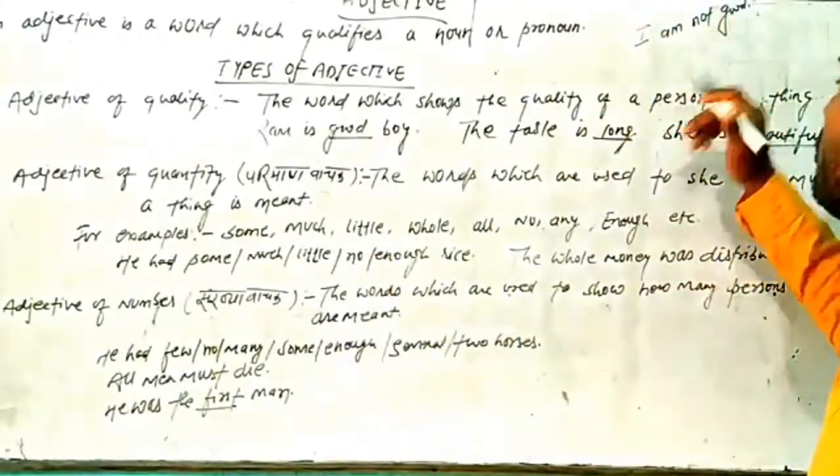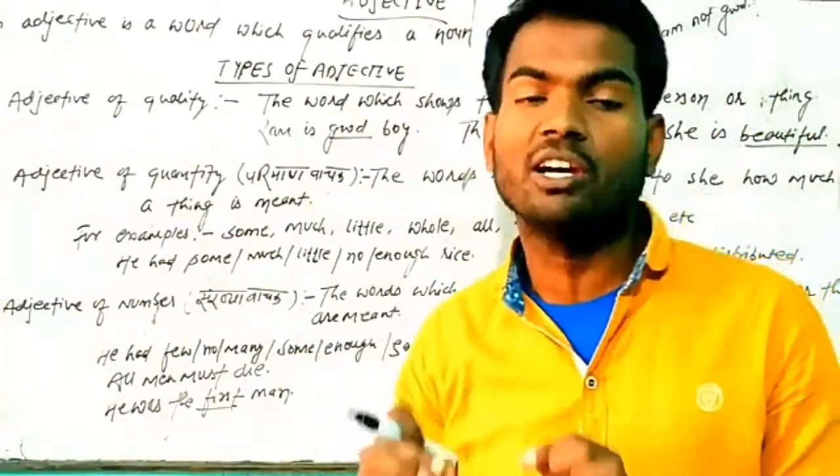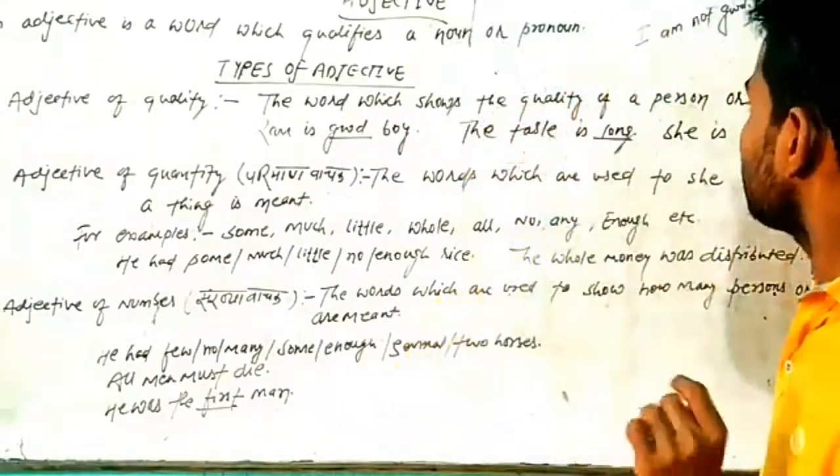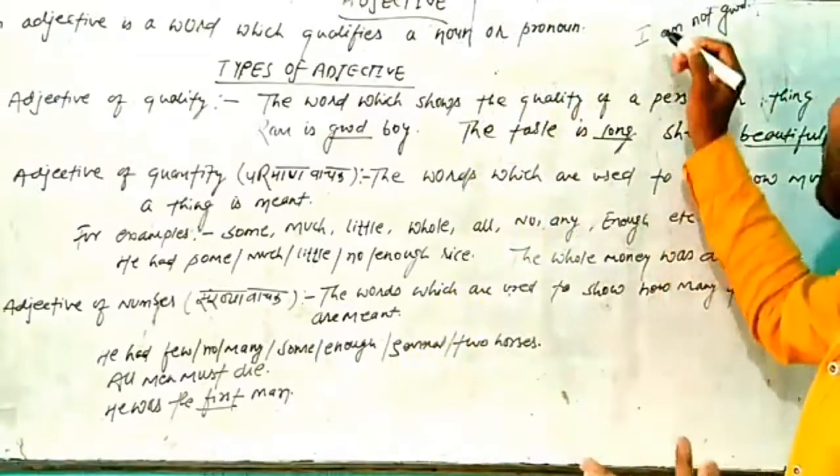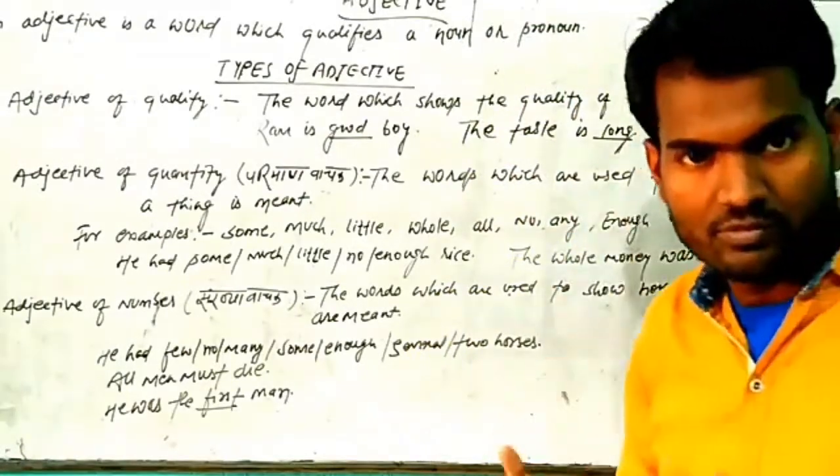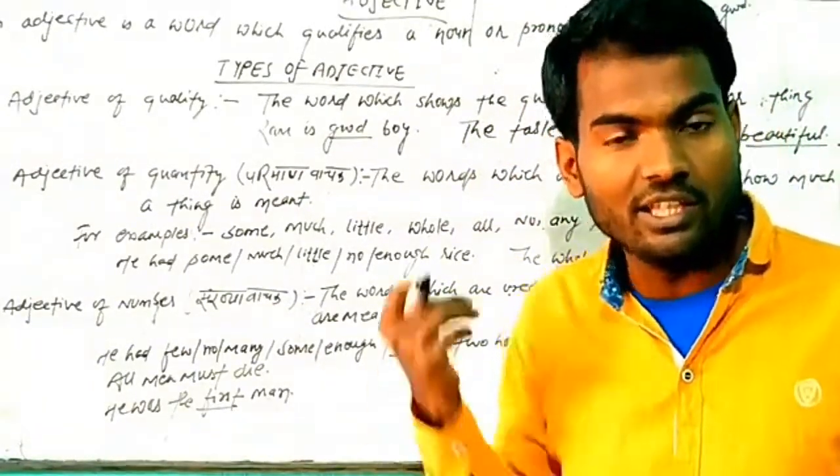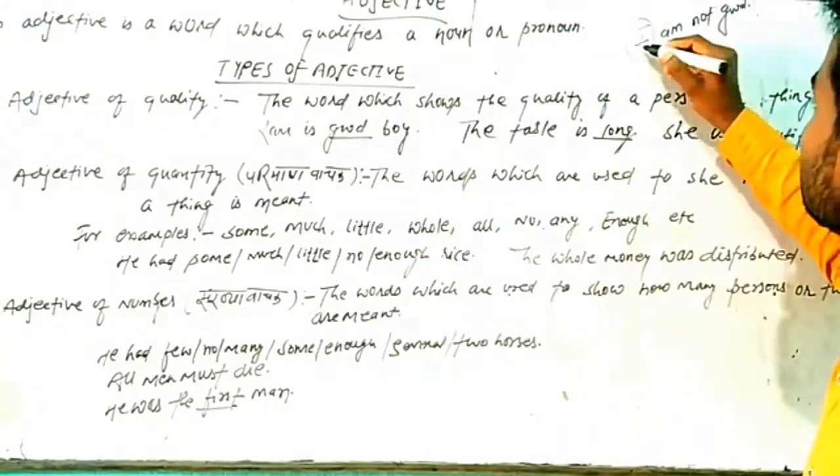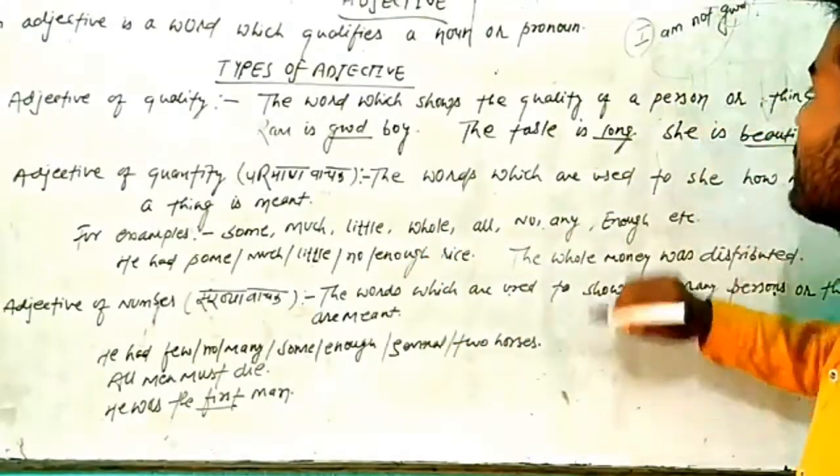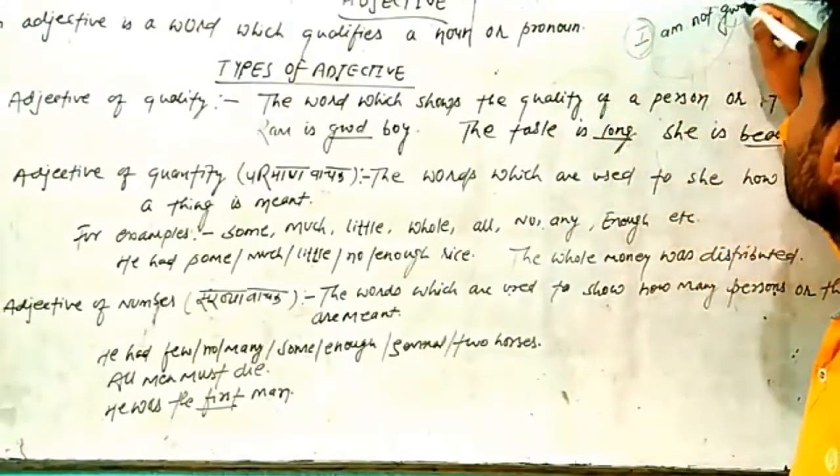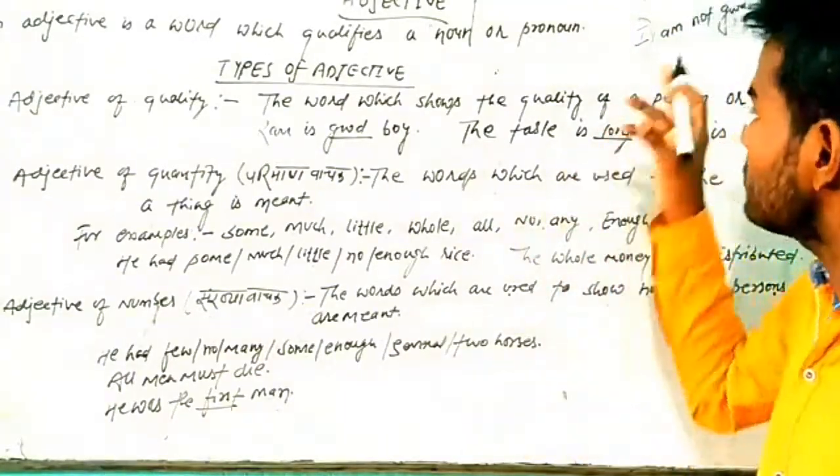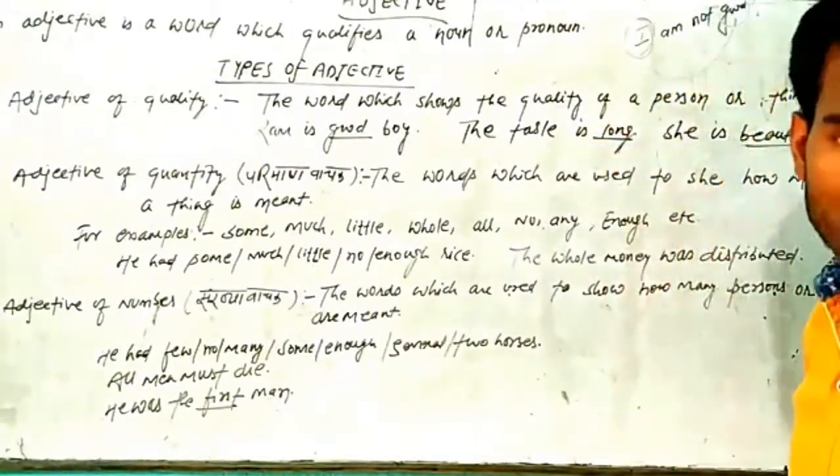To I am not good ka matlab hota hai main acha nahi hun. Ab main acha nahi hun to acha ko nahi hai? Main nahi hai to main kya hai? Ek kya hai? Yeh ek pronoun hai. Yeh kisko qualify kar raha hai? Good ko qualify kar raha hai. So I is pronoun and good is adjective because this word is qualified to the pronoun.